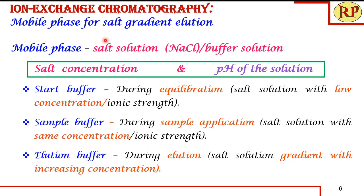Next, we move on to the mobile phase. There are two methods of elution: salt gradient and pH gradient. For salt gradient, the concentration of the salt and the pH of the solution are the most important parameters.